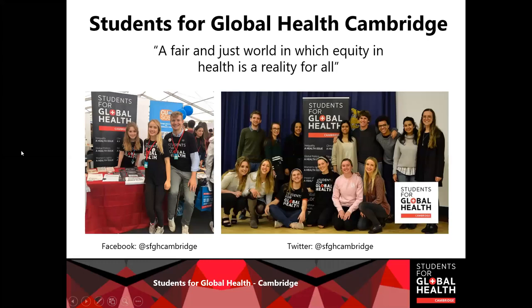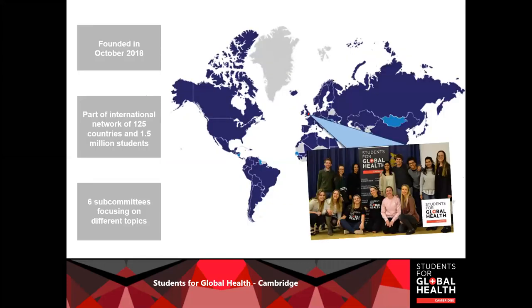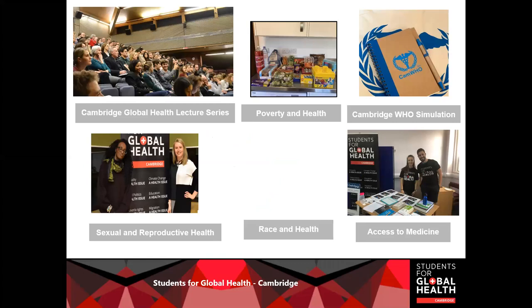For those joining who are not aware, Students for Global Health is a student network and registered charity whose mission is tackling global and local health inequities through education, advocacy, and community action. Our Cambridge branch is part of an international network of over 1.5 million students. We have six subcommittees, each with a different focus, running a lot of events that may be of interest to you, so please connect to our social channels, website, Facebook, Twitter, and so on.